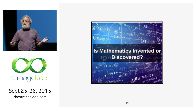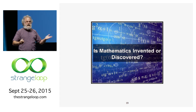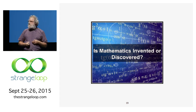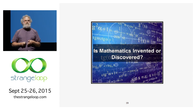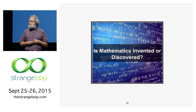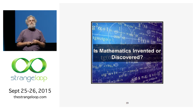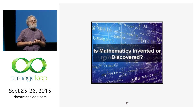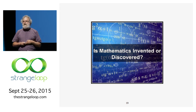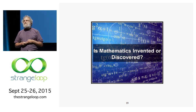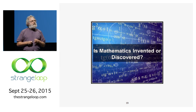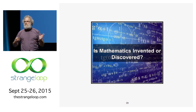Philosophers often argue: is mathematics invented or is it discovered? Three times — three different independent definitions all turn out to be equivalent. That's powerful evidence that you've not invented something, you've discovered something. It's not just sports fans who are impressed by a hat trick.